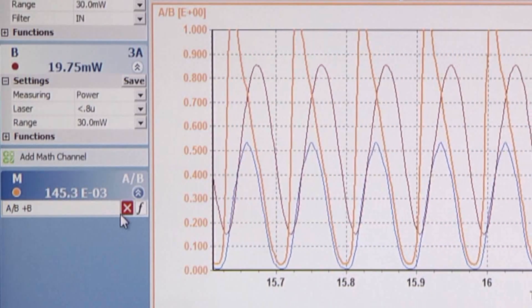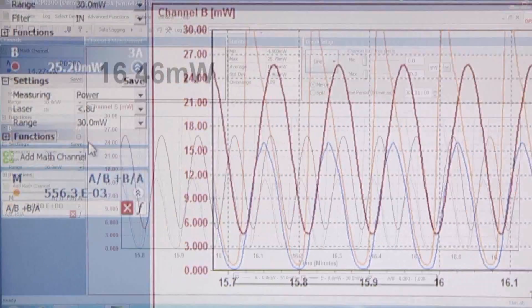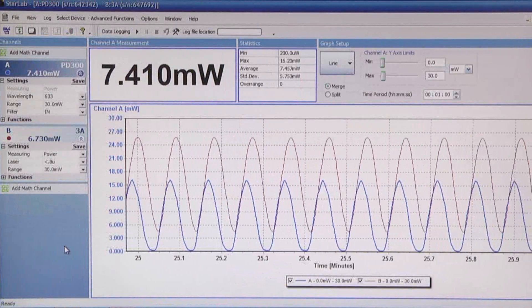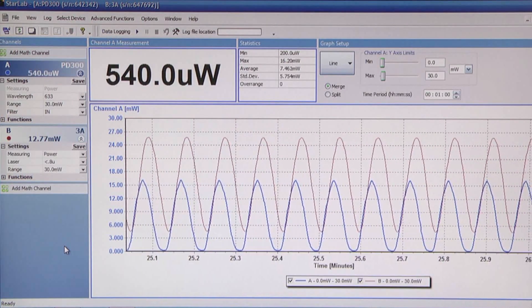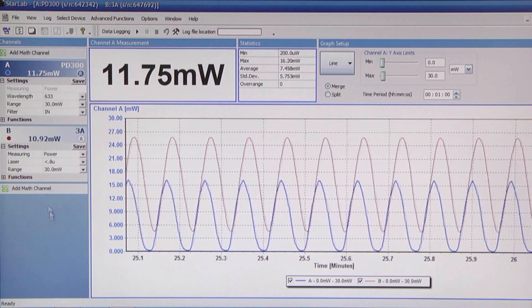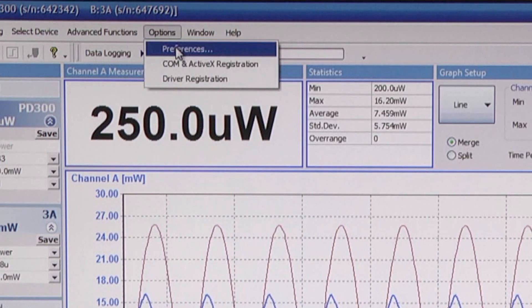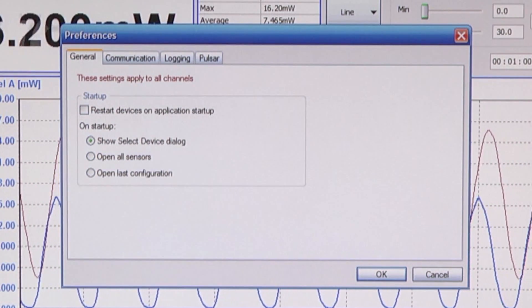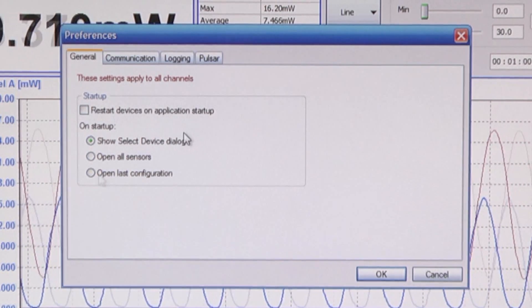Now let's close down Starlab, but before doing so let's set up the configuration for next time. Let's click on options, then preferences. The default is to show the devices and set things up each time. Let's say we want to remember the present setting and start up in the same format, so then let's click open last configuration.